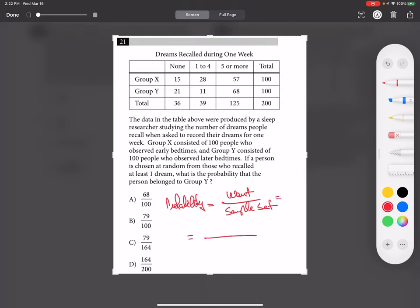The sample set was 200, but he wants only who recalled at least one dream, so I exclude 36. 200 minus 36.